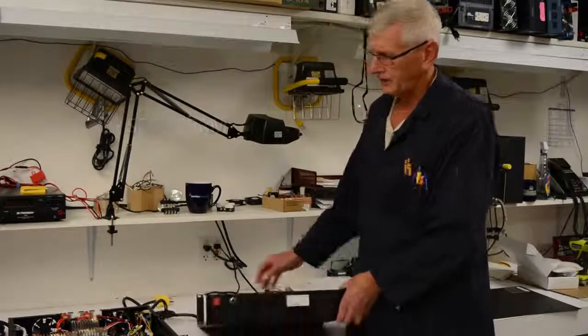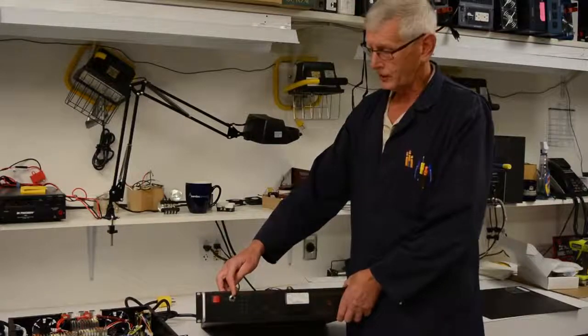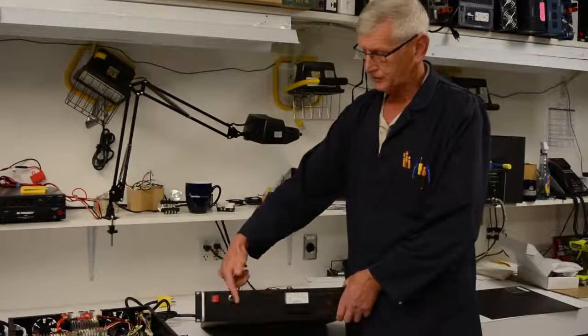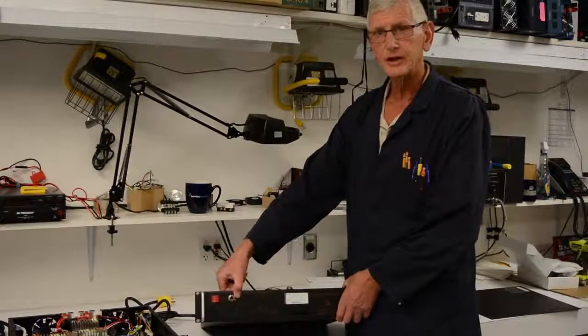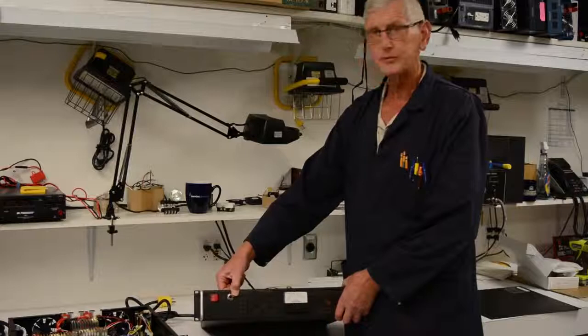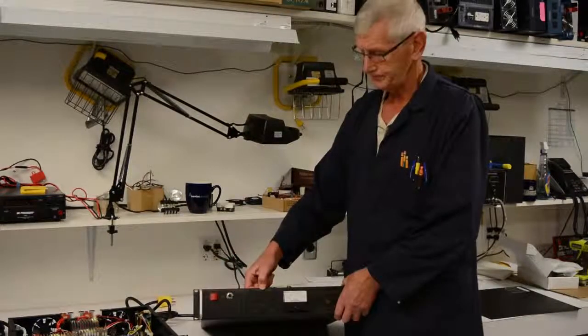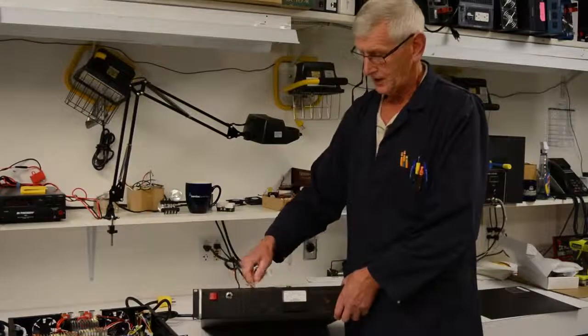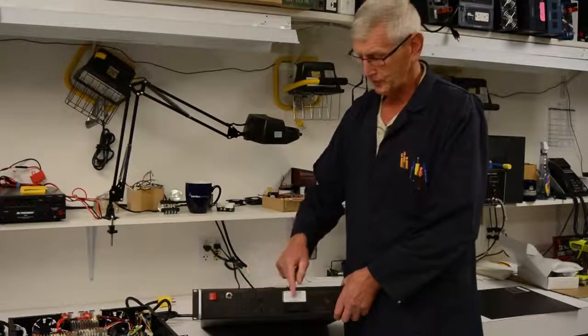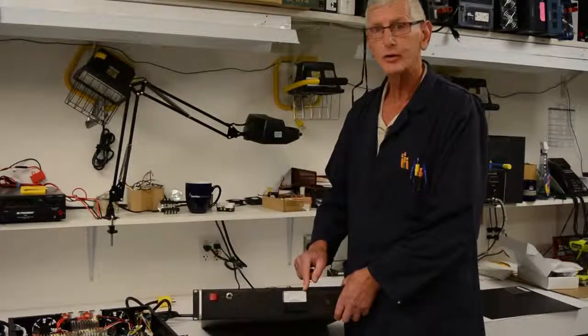On the front face plate, we have the on-off switch, a breaker for overloads, the status of the power supply modules. This one has two LEDs because it has two modules, each at 20 amps or 40 amps total. A fan failure alarm LED indicator. A volt and amp switch for the meter on the front here, which will show you the status of the power going out of this unit.